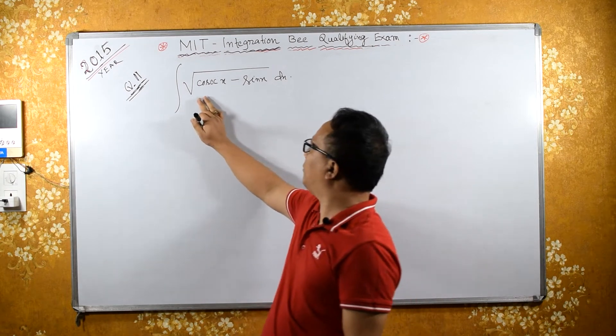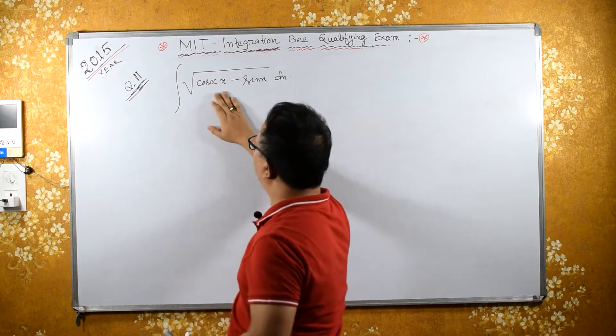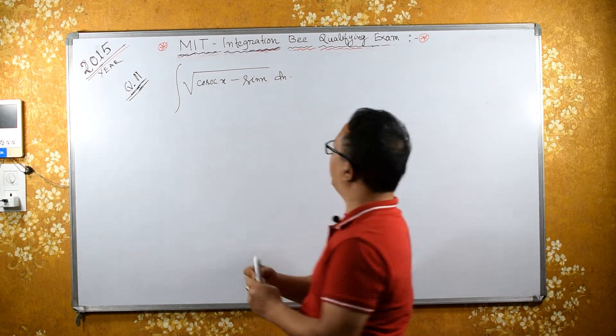Now this integral, integral of cosec x minus sin x. Let's convert cosec x to 1 by sin x and take the LCM. Let's see how it works.